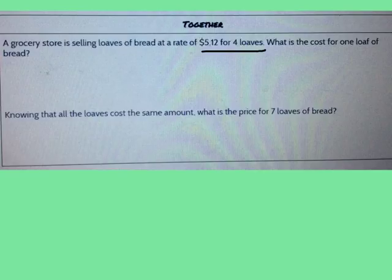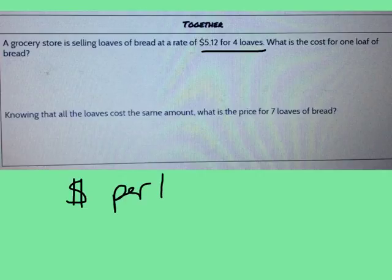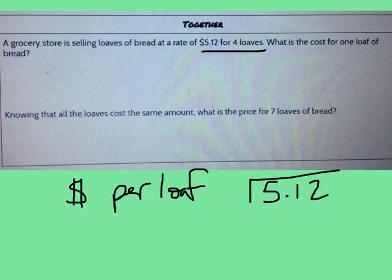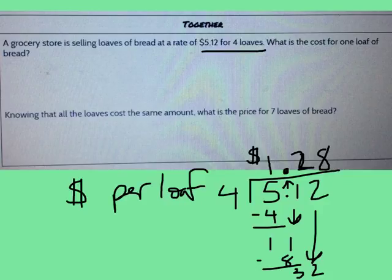Now, for me to figure out the cost per loaf, I'm going to take this information and actually make it into a division problem. I'm going to take my cost, $5.12, and I'm going to divide it by four loaves of bread. Go ahead and figure out how much each loaf of bread is. If four loaves of bread cost $5.12, then that means each loaf of bread costs $1.28. This makes sense because I know that each loaf of bread has to cost more than a dollar.